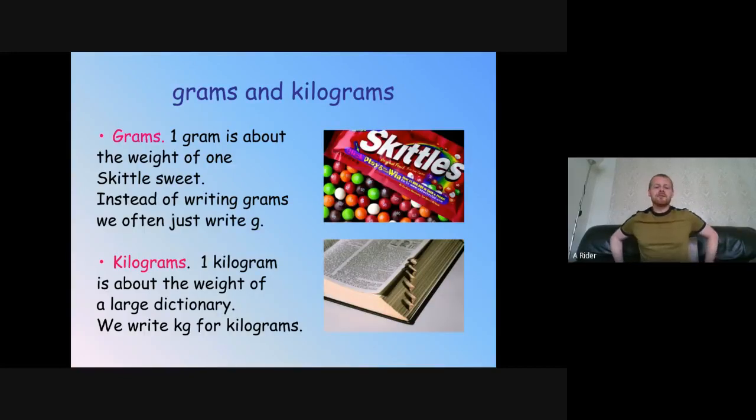A gram, or one gram, is about the weight of a bag of Skittles. Instead of writing grams we just write g. A kilogram is about the weight of a large dictionary, and instead of writing the whole word kilogram we write kg.